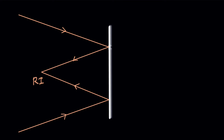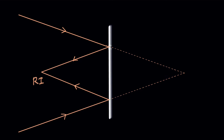So if we extend these rays, the point where they appear to meet acts as the virtual object for this real image.